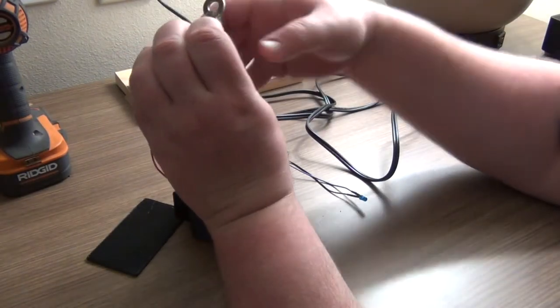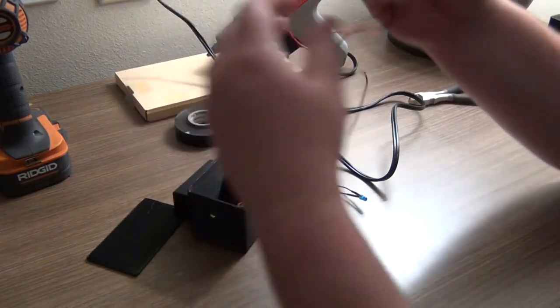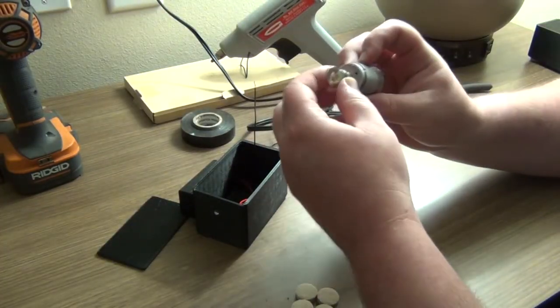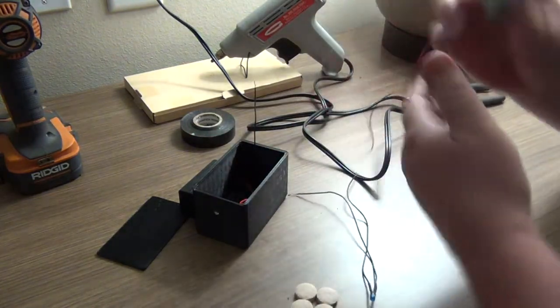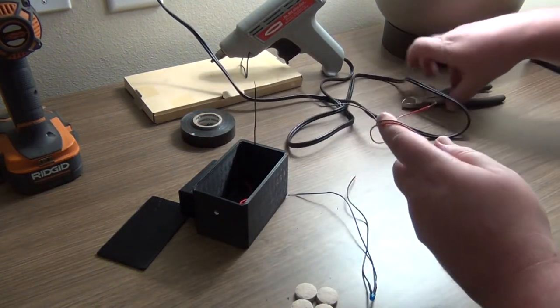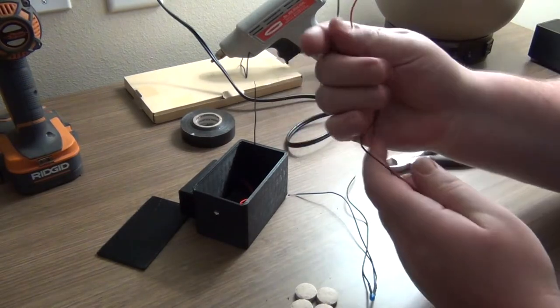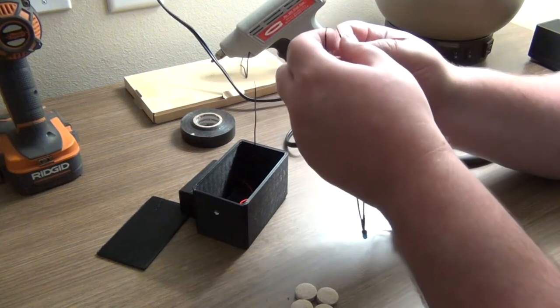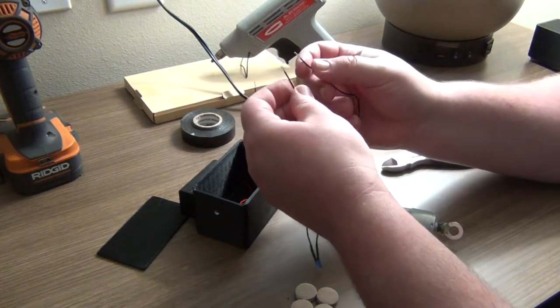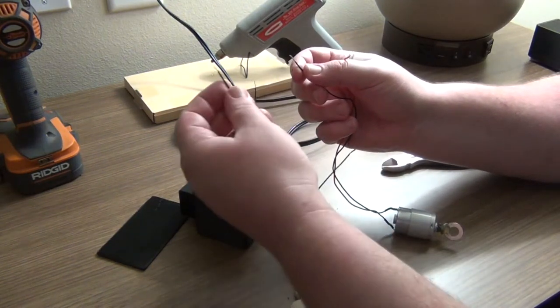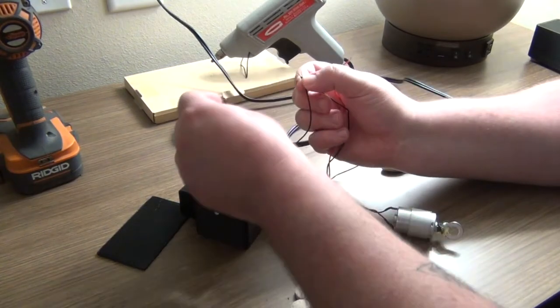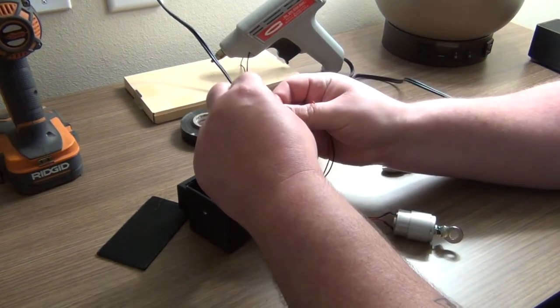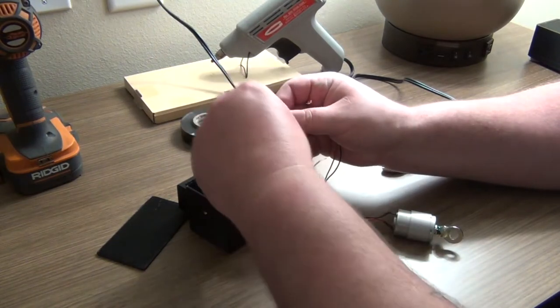That looks good. Now that we've let our magnet dry onto our motor here, we want to get it all wired up. So we want to take the black which is the negative from our motor, our LED light, and our power supply and thread them all together. Just twist them up.